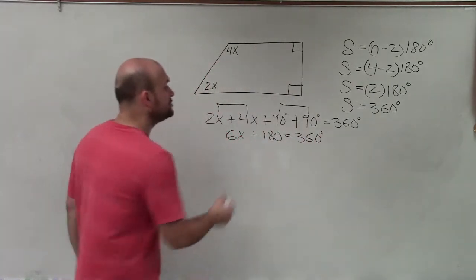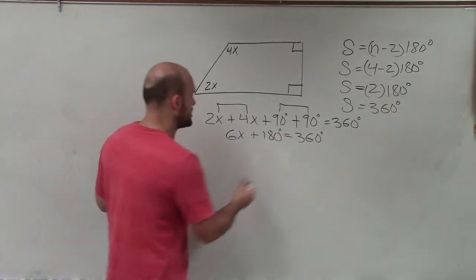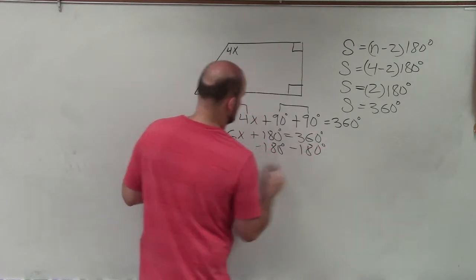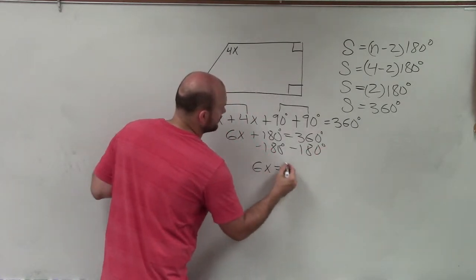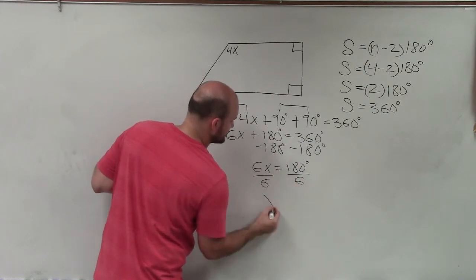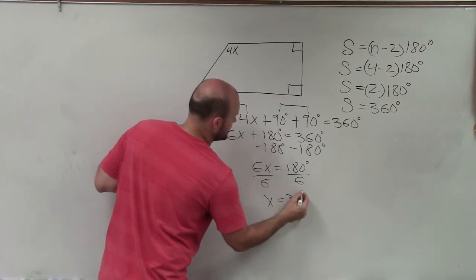Now, I have a two-step equation that to solve for x, the first thing I need to do is subtract 180 on both sides. Therefore, I have 6x equals 180 degrees. Now, just divide by 6, divide by 6, x equals 30 degrees.